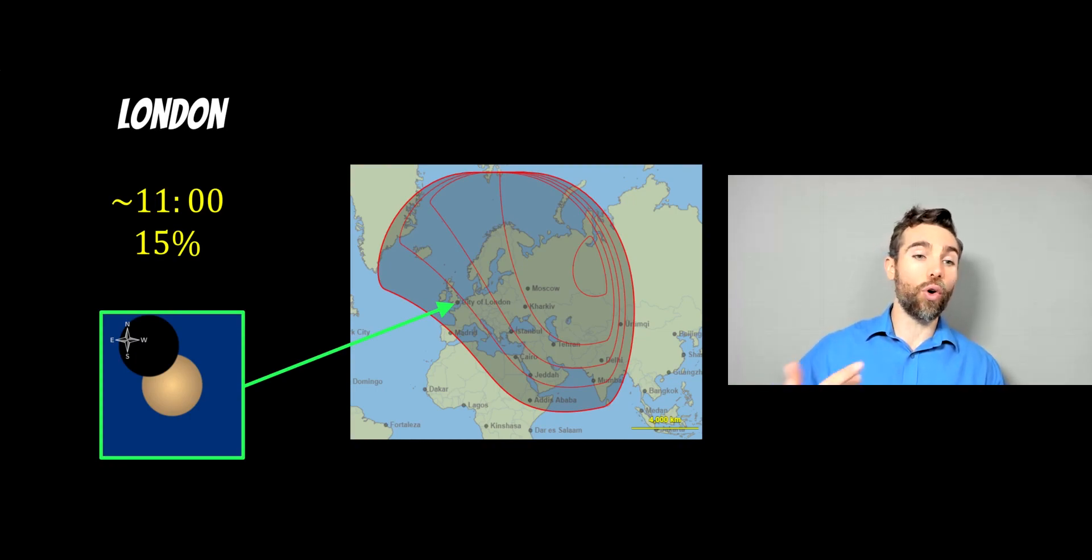If you go a little bit further north in the UK, then you'll have a higher percentage of the sun actually covered by the moon. It'll be greater than 15 percent, up to about 37 percent if you go further north in the UK. So that's for London - you're not going to get much of the sun obstructed. It's not going to go particularly dark, for example.